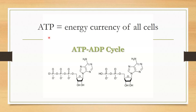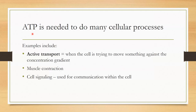Simply put, ATP is the energy currency of all cells. ATP is needed to do many cellular processes. Active transport is one of those things that require ATP. Notice this word is in bold print, as we have previously discussed this type of transport. When the cell is trying to move something against the concentration gradient, that is what we call active transport. ATP is necessary for muscle contraction as well as cell signaling, which is used for communication within the cell.